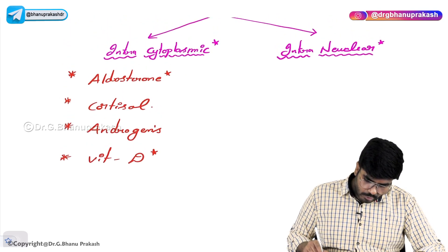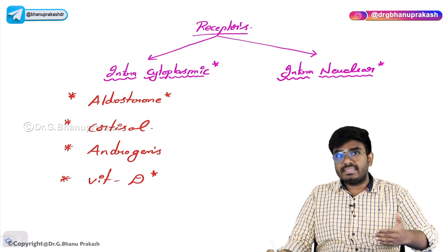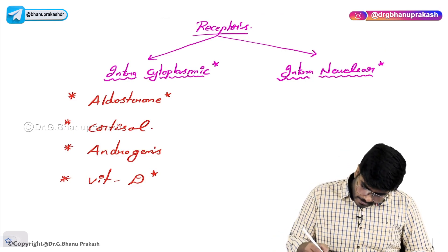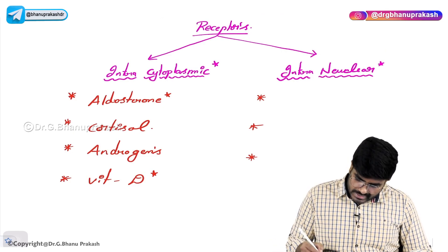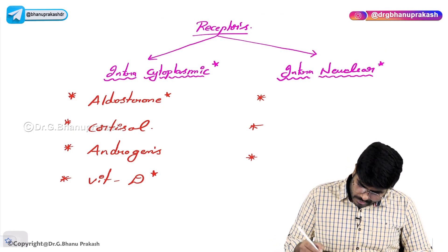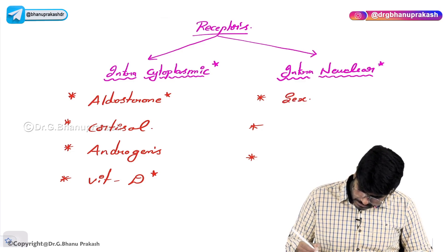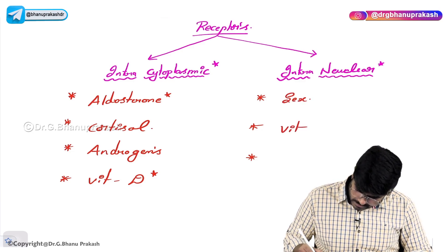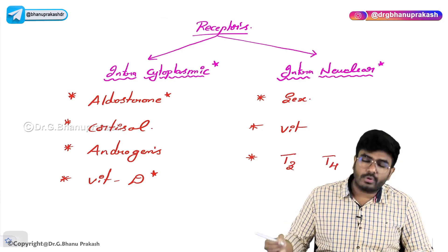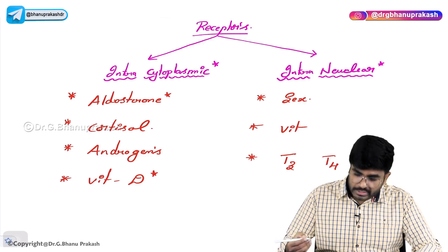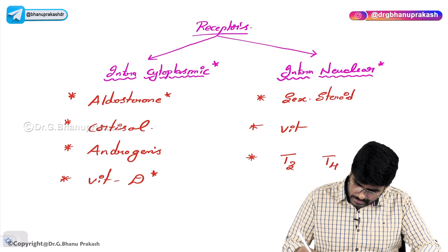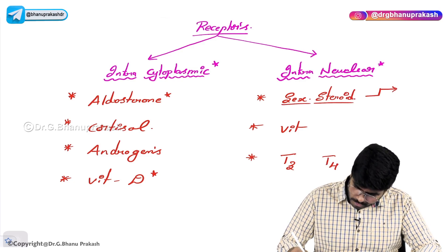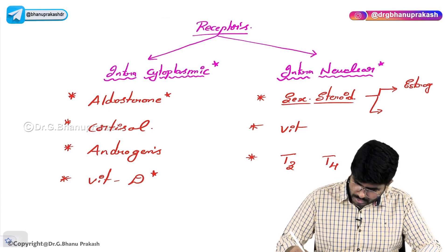Intracytoplasmic receptors are seen for those hormones. Now let's talk about the intranuclear receptors. Intranuclear receptors are used by hormones — a mnemonic I use is 'sex with T3, T4.' So sex steroids like estrogen and progesterone use intranuclear receptors.